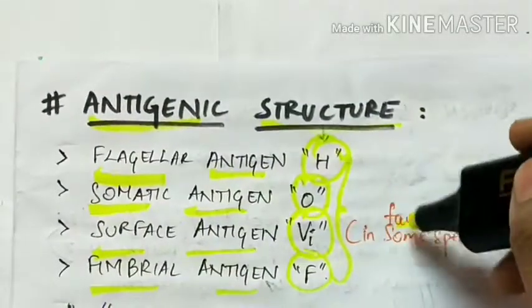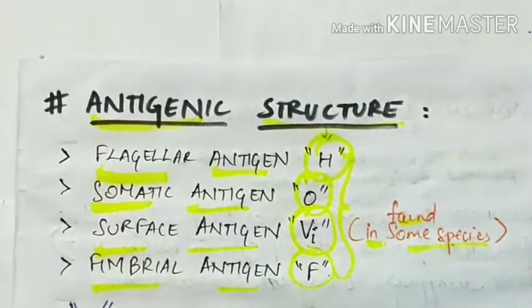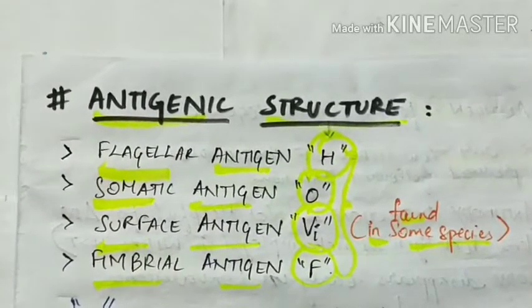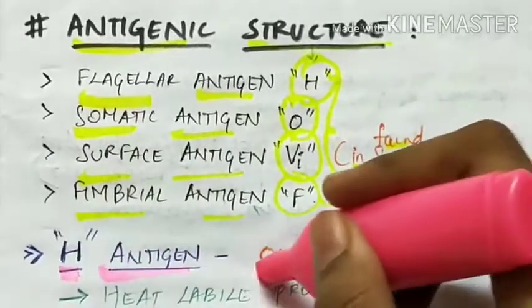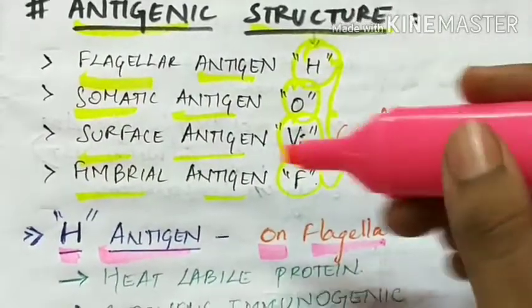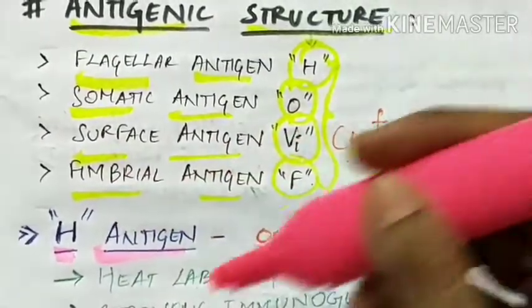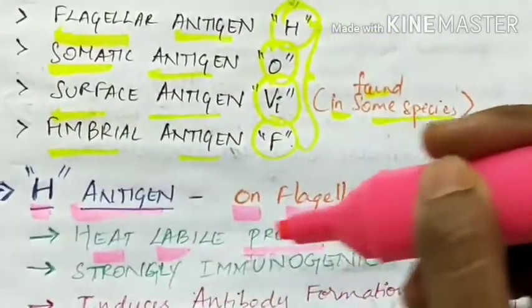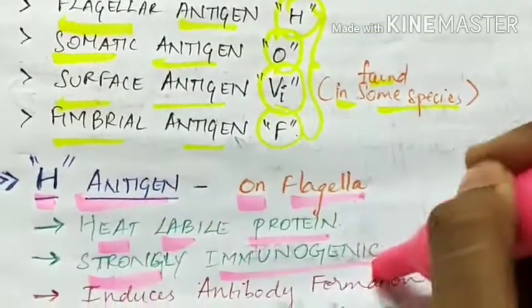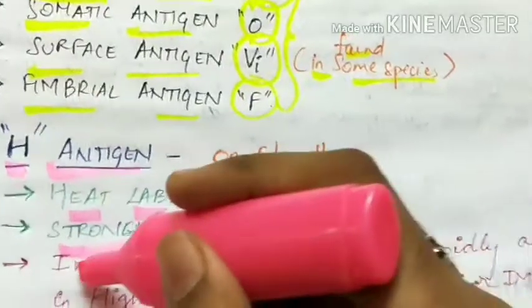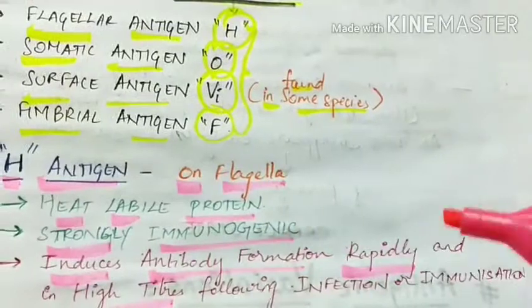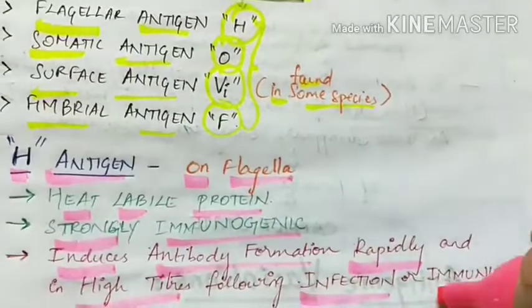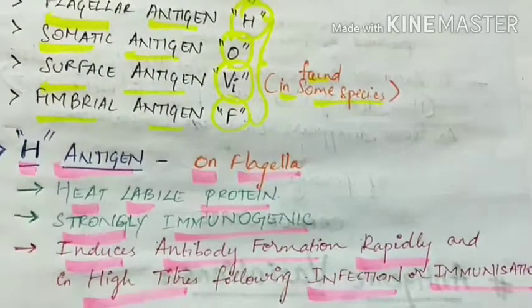First is H antigen, which is present on the flagella, so it is called as flagellar antigen. It is a heat-labile protein and it is strongly immunogenic. So it induces antibody formation rapidly and in high titers following any infection or immunization.